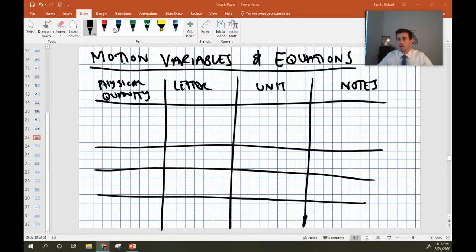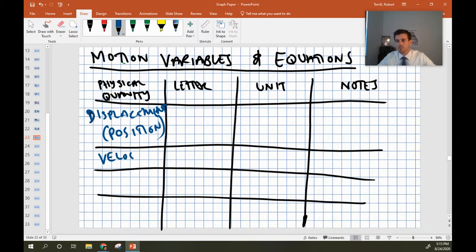So I'm going to talk about all the different variables that we should know about. Some of the different physical quantities that we've already talked about are things like displacement or position, we've talked about velocity, we've talked about acceleration, and we've talked about time.